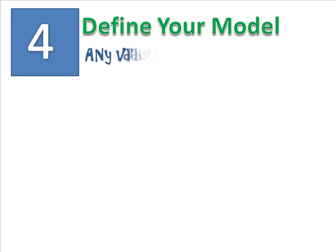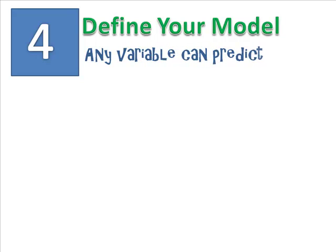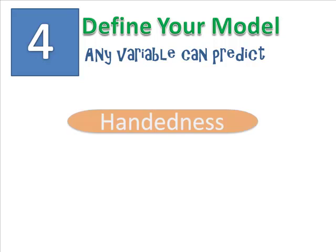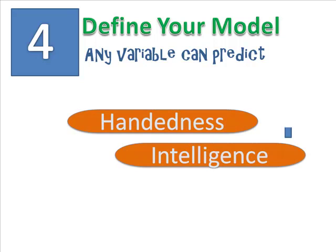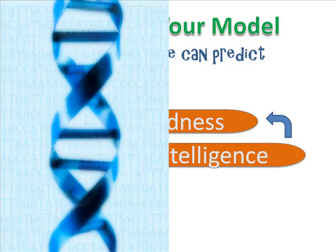In research, any variable can be used to predict another, so it's important to use your theory to determine the direction of your hypothesis. You could predict that intelligence causes handedness, or you could predict that handedness causes intelligence. To decide, think back to your theory and lit review. When you were reading about handedness, you probably read that it was tied to genetics. People don't choose to be left-handed — they are born that way.